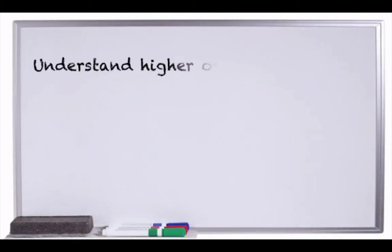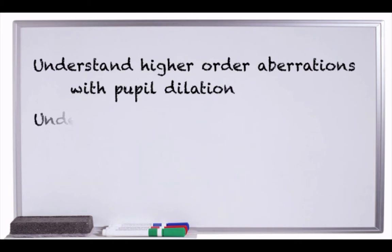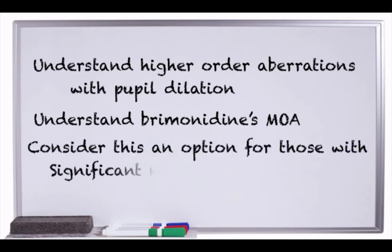Understand that higher order aberrations with pupil dilation is a significant problem for some patients. Understand how brimonidine's mechanism of action is ideally suited to help prevent pupil dilation and consider this as a viable option for those with significant nighttime visual issues.